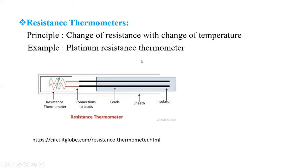Third is resistance thermometer. Its principle is change of resistance with change of temperature. Example is platinum resistance thermometer. It is shown in this figure.